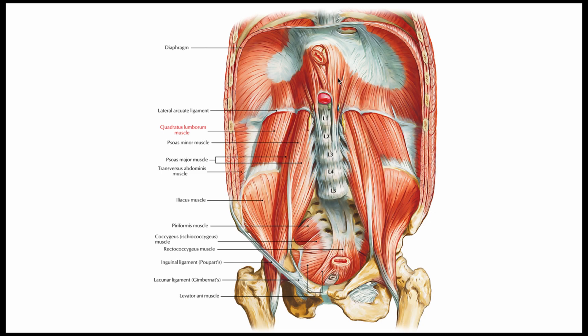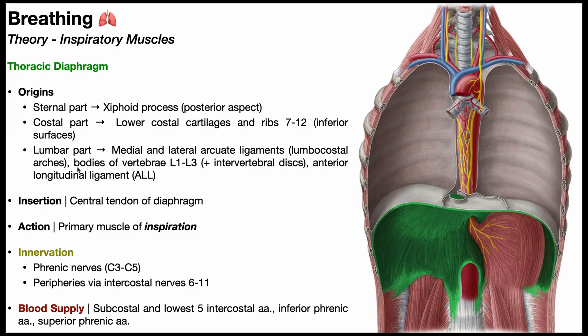Each hemidiaphragm also has a crus. The left crus goes down to the vertebral body of L3; the right crus goes down to about the body of L2 and the intervertebral disc between L2 and L3. Each crus originates from the bodies of vertebrae L1 through L3 and their associated intervertebral discs, and there is also an origin off the anterior longitudinal ligament of the spine.